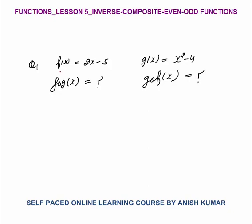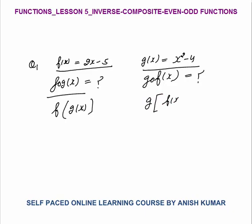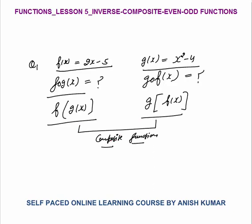Now the question says that f(x) equals 2x minus 5, and g(x) equals x squared minus 4. Now f(x) and g(x) are functions on x. What is f∘g(x)? We can say this is the function f on g(x). And what is g∘f(x)? This is the function g on f(x). This is called a composite function. Composite function means two functions are operated simultaneously, f as well as g.